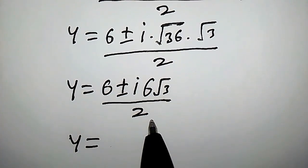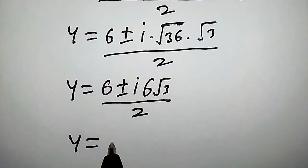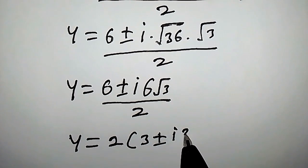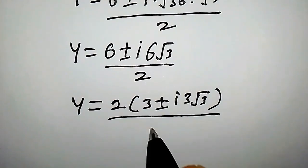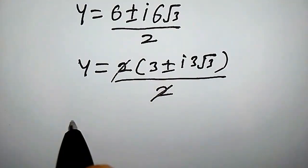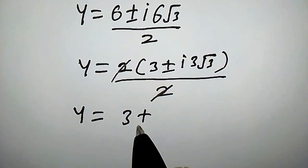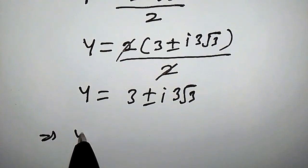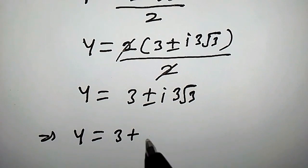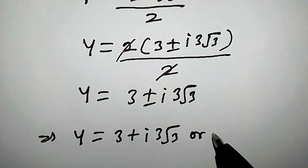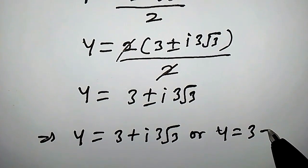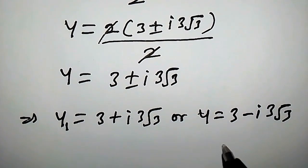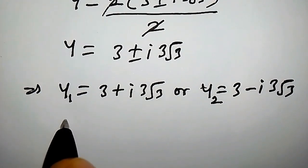Notice that we can factor out 2, giving 2 times 3 plus or minus i times 3 root 3, divided by 2. This means y equals 3 plus or minus i times 3 root 3. So y₁ equals 3 plus i times 3 root 3, and y₂ equals 3 minus i times 3 root 3.